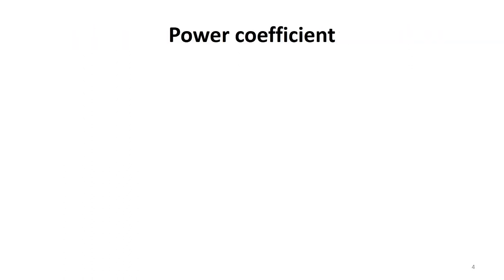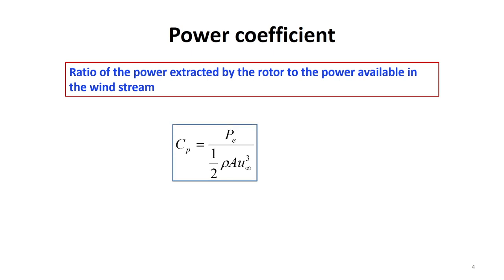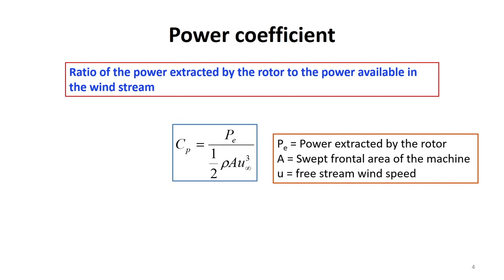Let us first consider power coefficient. Power coefficient is defined as the ratio of the power extracted by the rotor to the power available in the wind stream. Mathematically, it can be expressed as Cp, which is power extracted by the rotor divided by half rho A u-infinity cubed. Here u-infinity is the free stream wind speed, A represents the swept frontal area of the machine, and rho is the density of air.